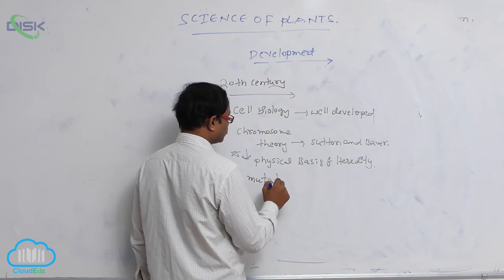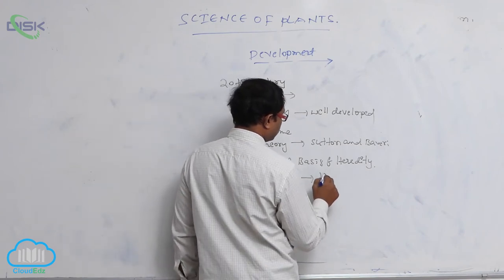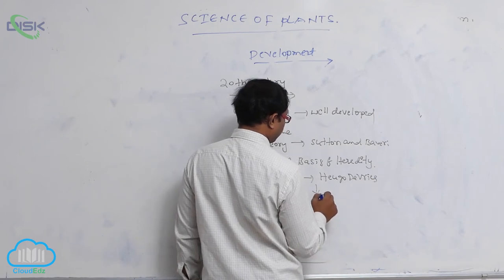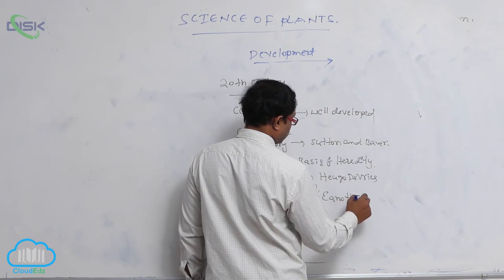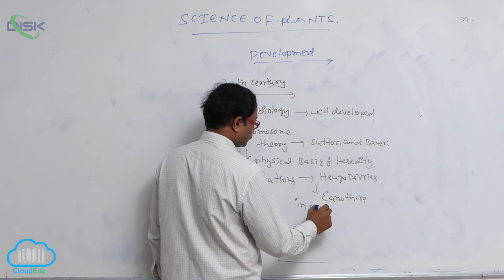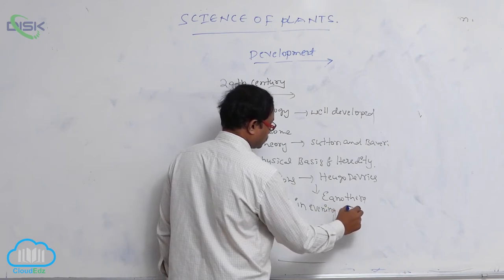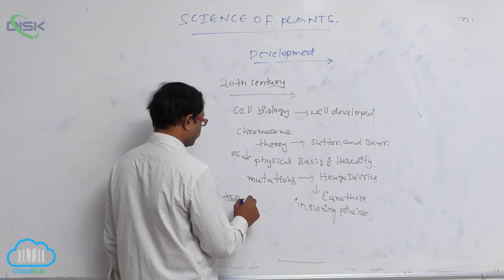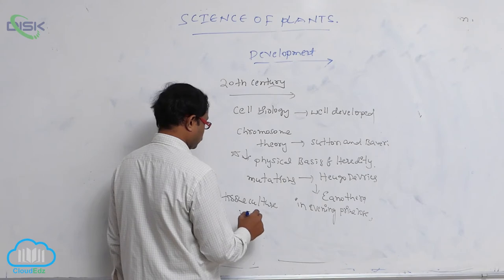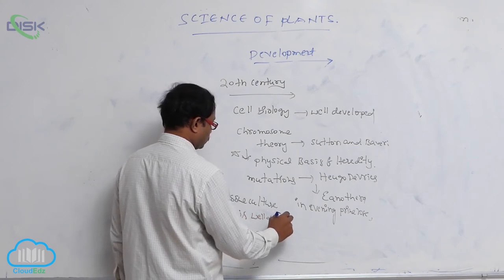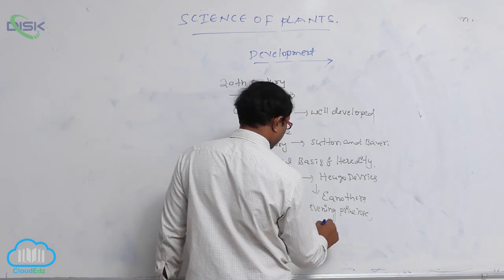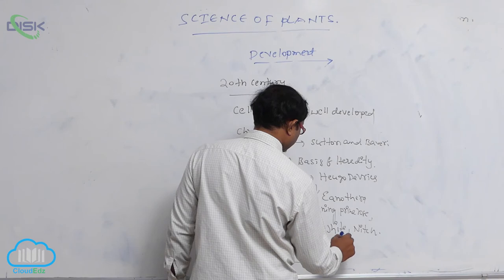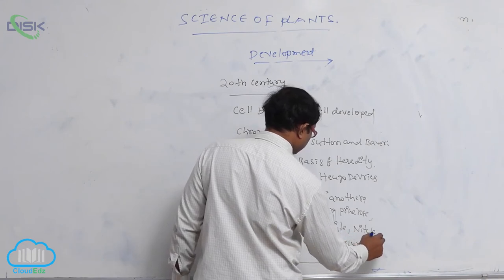Mutations were for the first time identified by Hugo de Vries in Oenothera, the evening primrose. After that, tissue culture is well developed by White, Nitsch, Maheshwari, and Guha.